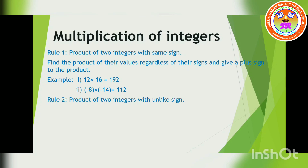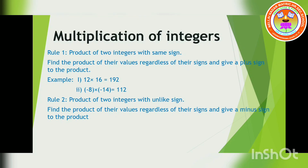Next, rule 2: product of two integers with unlike signs. That means one number will have plus and the other number will have minus. Find the product of the numbers and give a minus sign to the product. So when two numbers have unlike symbols — one plus and one minus — you have to find the product but write a minus sign to the product.